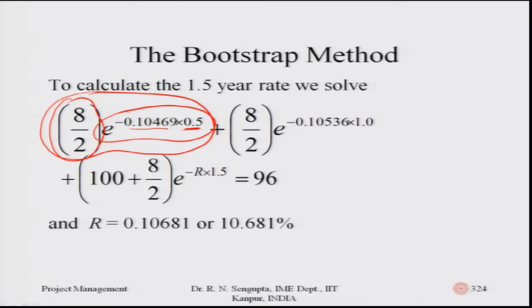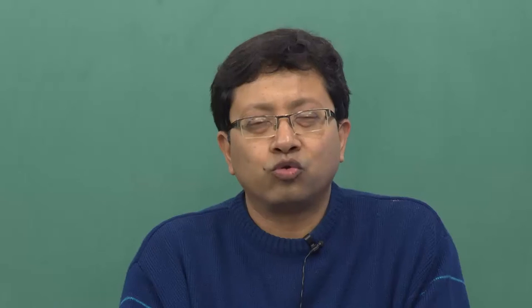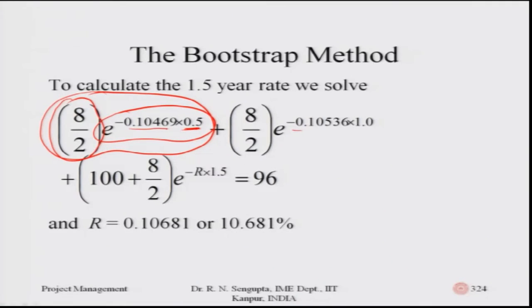The next calculation is for another four rupees received after one year. In this one-year time period the continuous compounding rate is different — it is 10.536. So you multiply by e to the power of minus 0.10536 into one, since the time period is now one year. This gives the present value of the four rupees paid after one year.